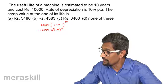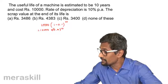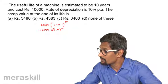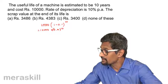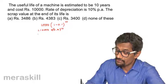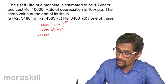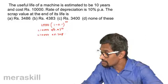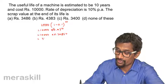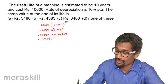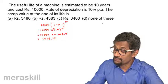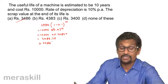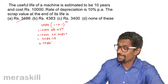Computing 0.9 raised to 10 by successive multiplication gives approximately 0.34867. So the scrap value is 10,000 into 0.34867, which works out to approximately ₹3,486. The scrap value of the machine is ₹3,486.